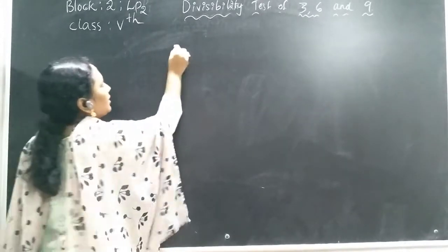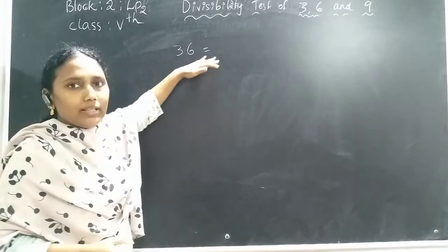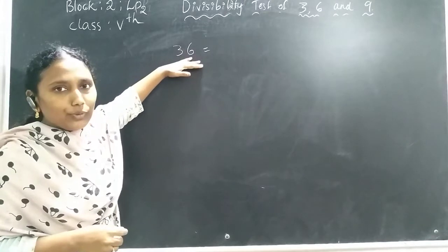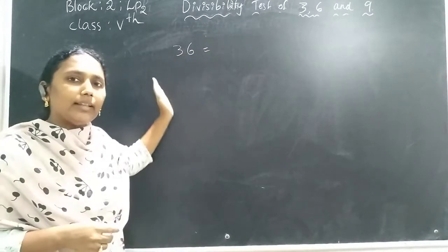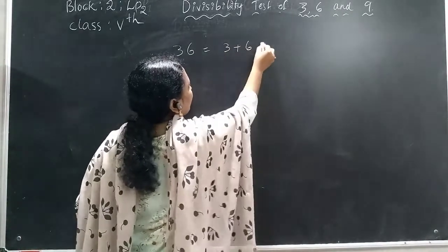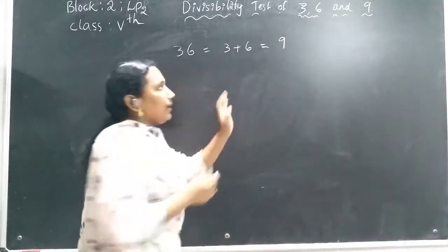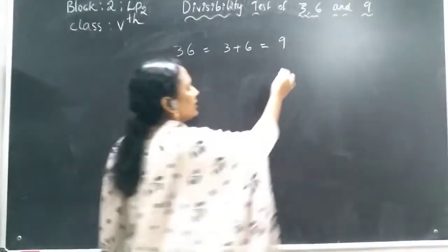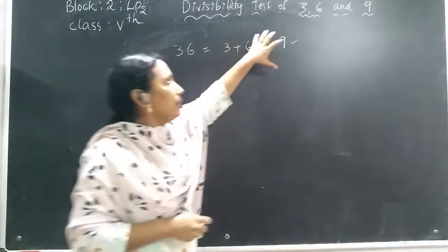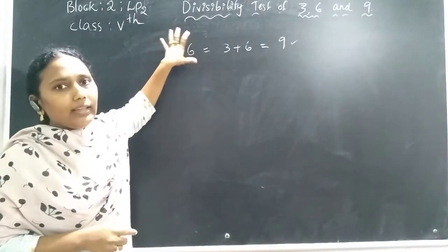Let's see some examples. Take 36. Is it divisible by 9? We add 3 plus 6, which equals 9. Is 9 in the 9 times table? Yes — 9 times 1 is 9. So 36 is divisible by 9. The sum of the digits must be divisible by 9; then the given number is divisible by 9.